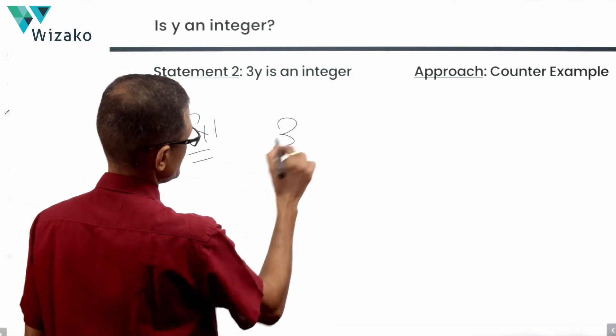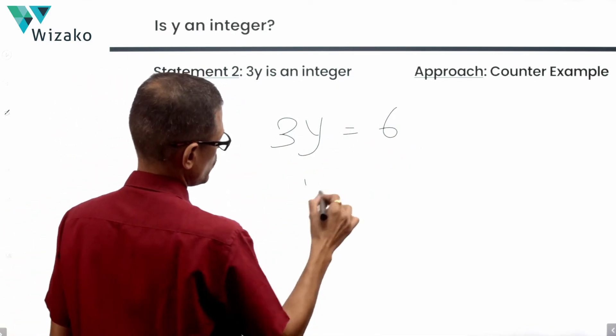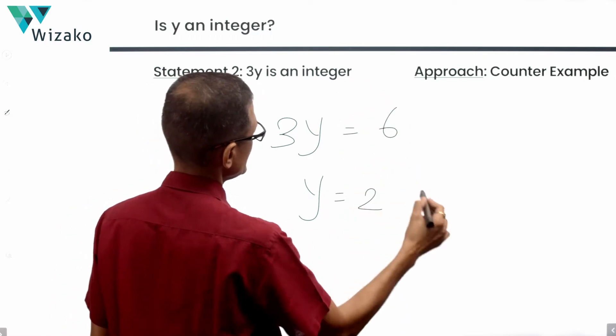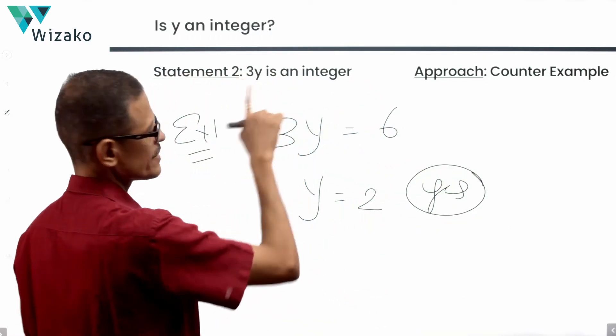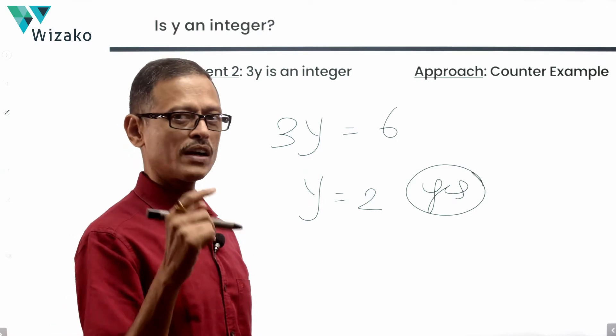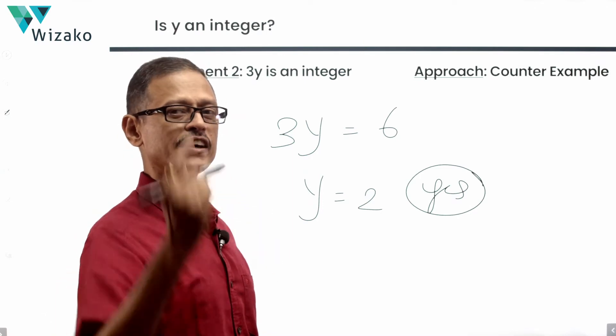Example 1, 3y is equal to 6. Y is equal to 2. Is it an integer? The answer is yes. All that the question says is 3y should be an integer. It's not saying what y is. It's asking you to figure out what y is.